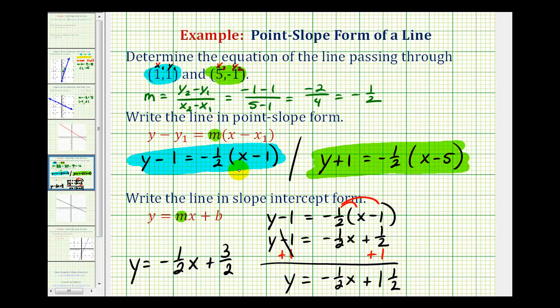So once we have the equation in point-slope form, it's a pretty straightforward process to determine the slope-intercept form of the linear equation. We just have to solve it for Y.